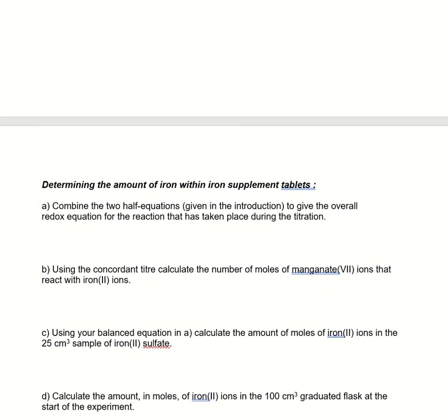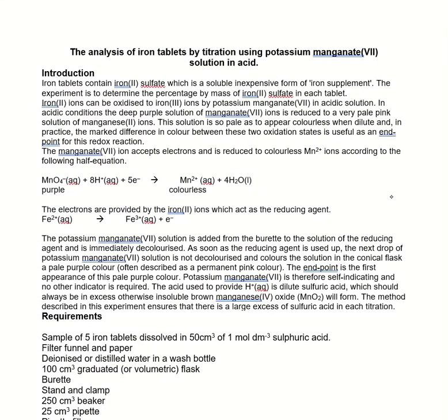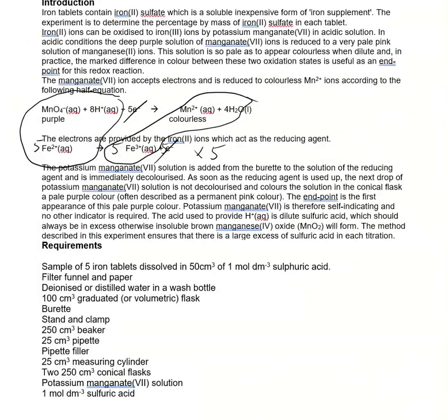And now just to go through the calculations for it. So first thing, combine the two half equations given in the introduction to give the overall redox equation. If we look back up at the half equations, we can see there that this is gaining five electrons. This only releases one electron. So in order to cancel the electrons out, I would need to multiply everything on this line by five. So I would have five, five, five there. That allows me to cancel the electrons, and then everything else I just merge together. So there is all of my reactants and there is all of my products. So the key thing is it's a one to five ratio.